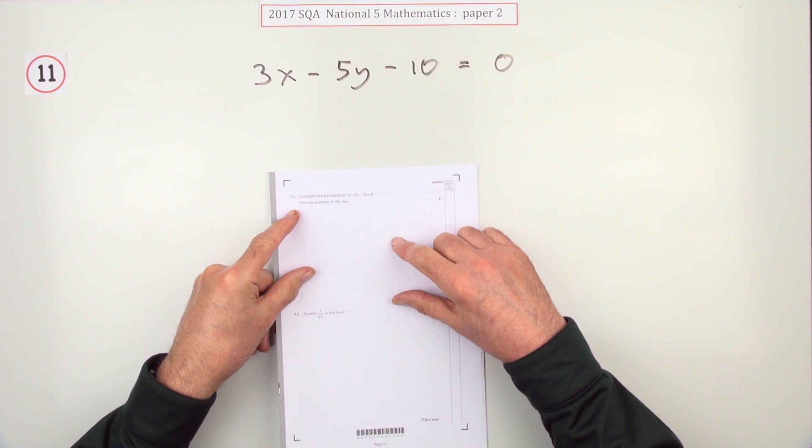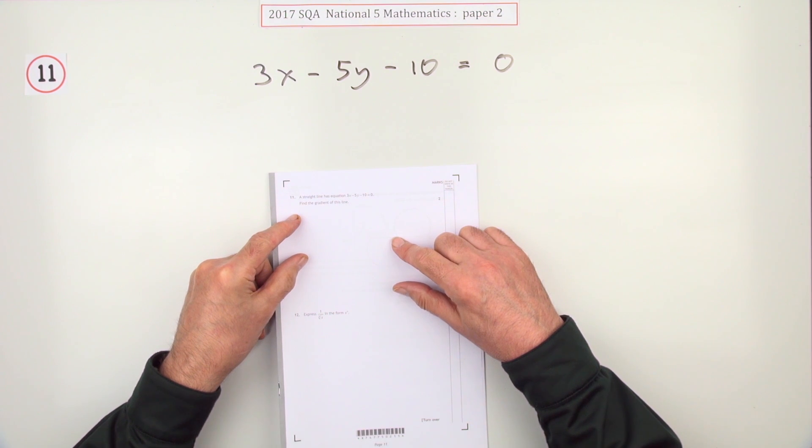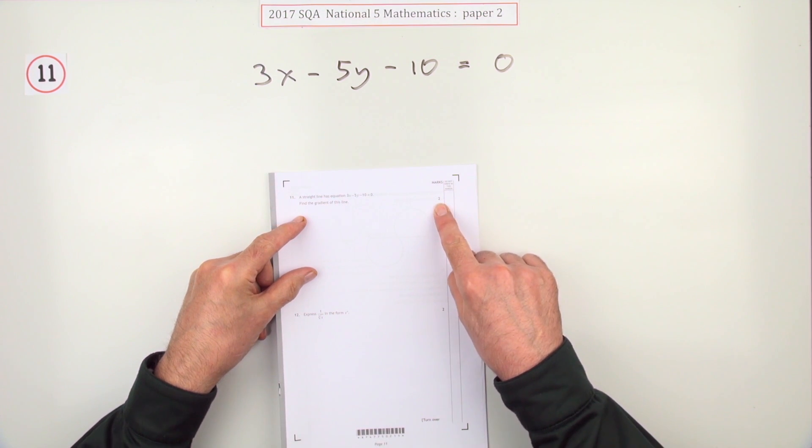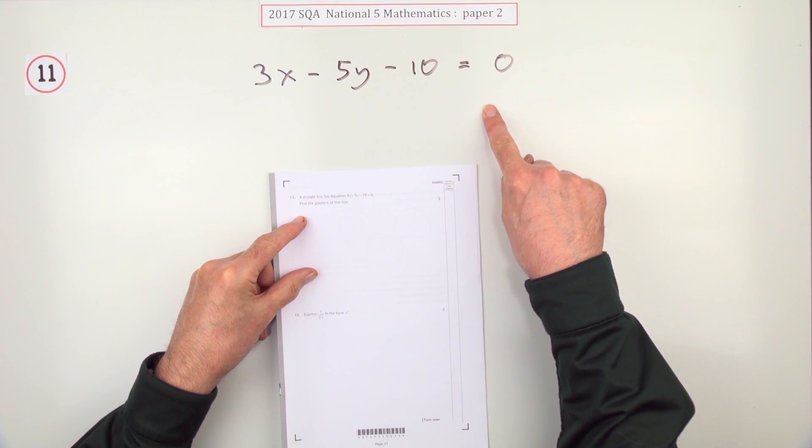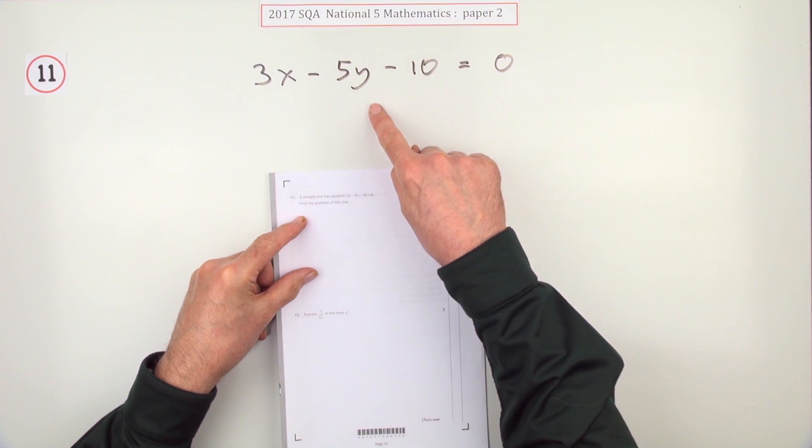Number 11 from paper 2 of the 2017 National 5 Maths. Here we go. A question here for two marks. Here's the equation of a straight line. What's its gradient?